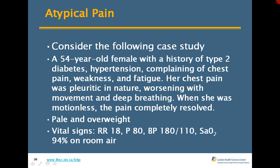Here's a case study: a 54-year-old female with type 2 diabetes and hypertension presenting with chest pain that is pleuritic in nature, worsening with movement and deep breathing, and resolving when motionless. Her history is strong and she's falling into the atypical pain category. Despite normal-looking vitals, you would absolutely treat this as ACS.